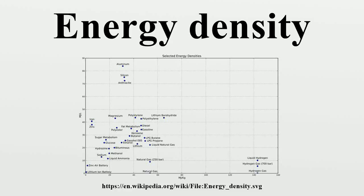Energy density is the amount of energy stored in a given system or region of space per unit volume or mass, though the latter is more accurately termed specific energy. Often only the useful or extractable energy is measured, which is to say that chemically inaccessible energy such as rest-mass energy is ignored. In cosmological and other general relativistic contexts, however, the energy densities considered are those that correspond to the elements of the stress-energy tensor and therefore do include mass energy as well as energy densities associated with the pressures described in the next paragraph.